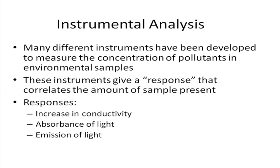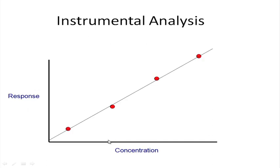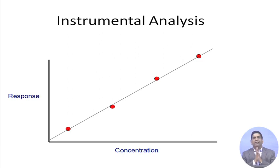The response could be increase in conductivity, which is used in ion chromatography, or absorbance of light, which is what AAS does. UV-Vis spectrophotometers from companies like Hach, Perkin Elmer, or Shimadzu work on absorbance. For the spectrophotometer we do not use any colored sample because it works based on colorimetry. Another type of response is emission of light, which is used in ICP. This is your typical calibration curve — the response is linear as concentration increases.